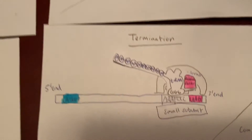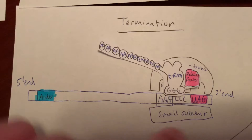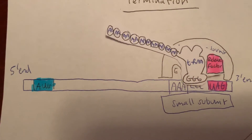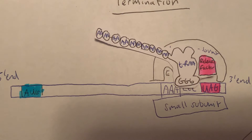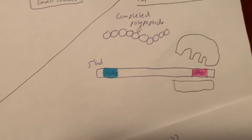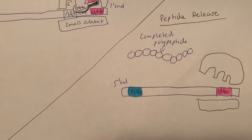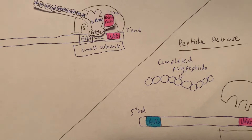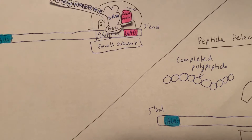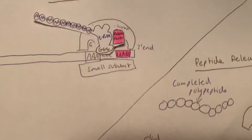Through termination of translation, the stop codon is read and the release factor comes in at the A site, signaling the tRNA at the P site to stop translation. This releases the completed polypeptide chain and the ribosome, producing the final protein product from the codons of the mRNA.